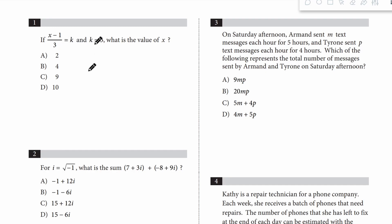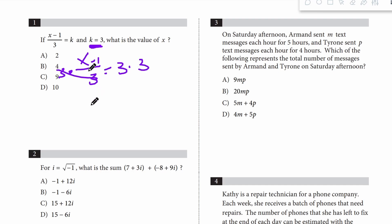Question 1: the equation gives us k equals 3, so I'm going to plug that in. x minus 1 over 3 equals 3. Multiply both sides by 3 to get rid of the fraction — that crosses out. We get x minus 1 equals 9. Add 1 to both sides, we get x equals 10. D is the answer.